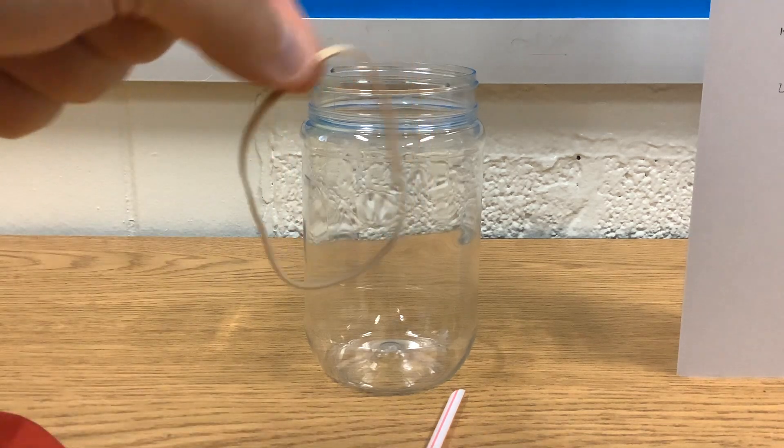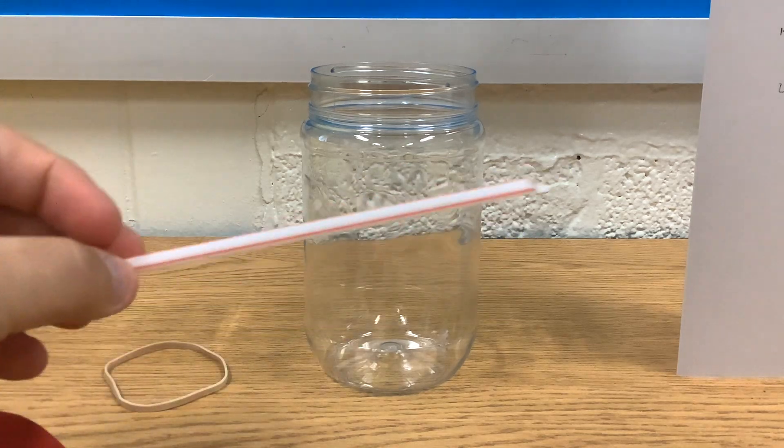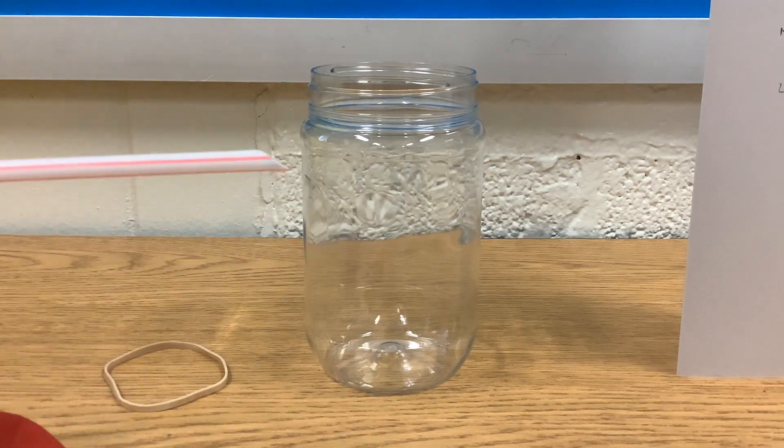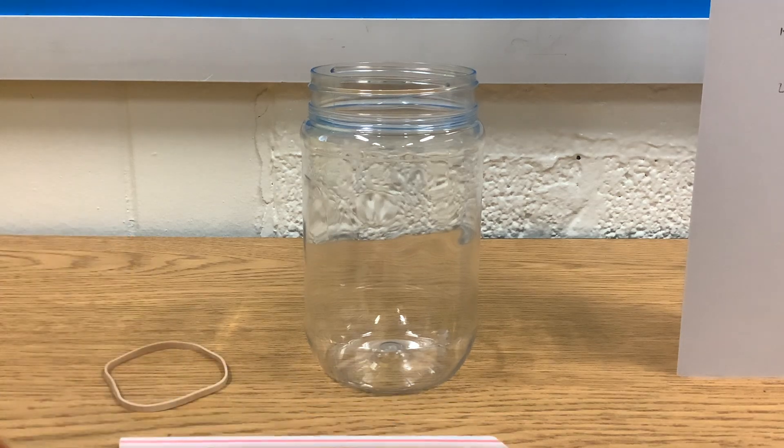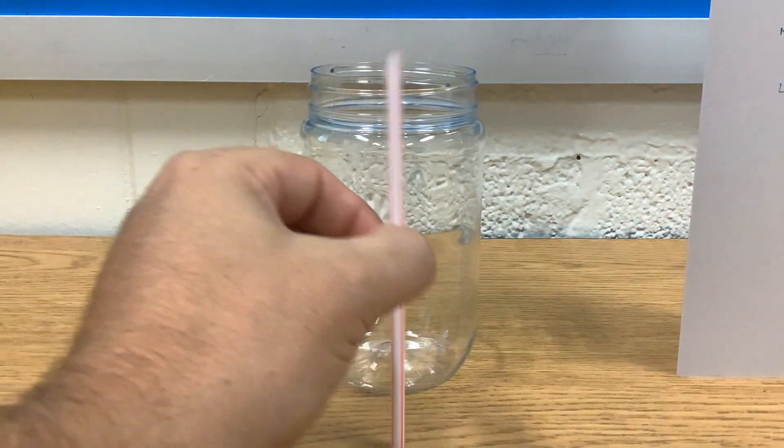You need a rubber band, a straw, and you want to take one end of your straw and cut it to a nice little point just like that. So cut it at an angle and maybe about as long as your jar.